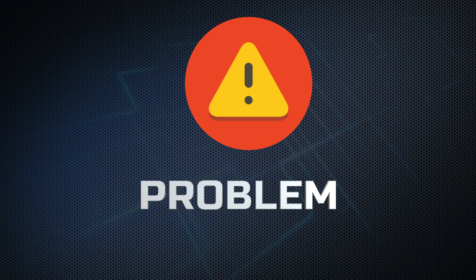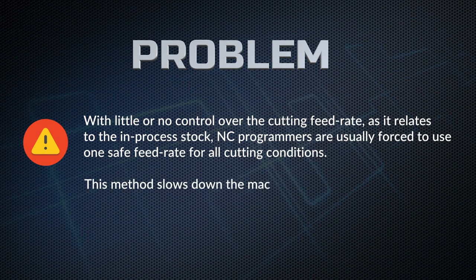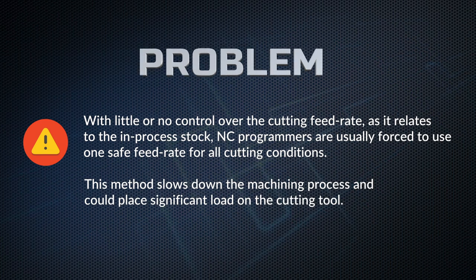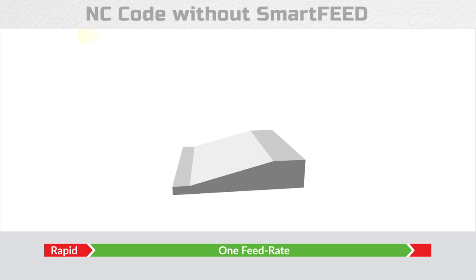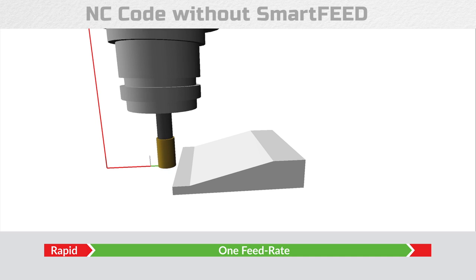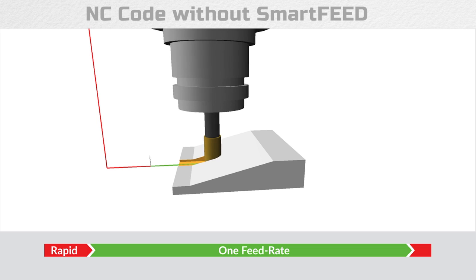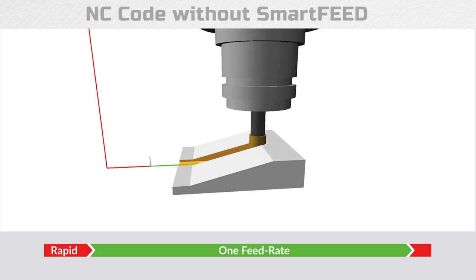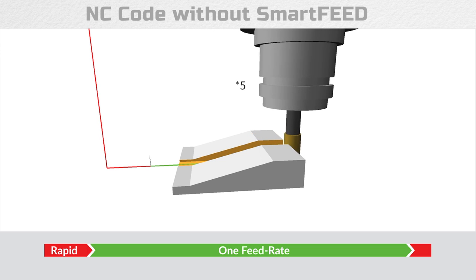The problem. Here is a simplified example of a machining process with a machine without any feed rate optimization. As you can see, one safe feed rate was used regardless of cutting depth. This will increase tool wear and machining time.